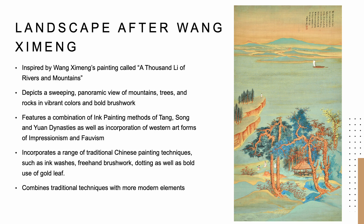This painting was inspired by another painting called A Thousand Li of Rivers and Mountains by a contemporary Chinese artist named Wang Ximeng. The painting by Zhang Dachian shows a panoramic view of two river banks, as well as surrounding mountains, trees, and rocks, through the use of vibrant colors and bold brushwork. This painting was made when the painter was at his peak of skill, where he mastered and combined the ink painting methods of the Tang, Song, and Yuan dynasties, along with western art forms Impressionism and Fauvism. He also incorporated a range of traditional Chinese painting techniques, which include ink washes, freehand brushwork, dotting, and the use of gold leaf.